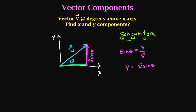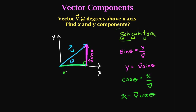We'll refer to the y direction as j-hat in a future video, but for right now the main goal is to get you thinking about breaking vectors down into triangles and finding the sides. For the x component, it's the adjacent side, so we use cosine: cosine of theta equals the adjacent side over the hypotenuse V. Therefore, the adjacent side equals V cosine theta. This would be in the i-hat direction, which we'll cover in another video.